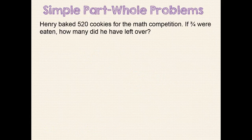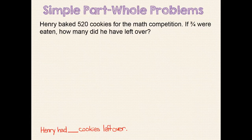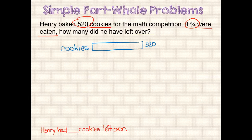Here's another simple part-whole problem. Henry baked 520 cookies for the math competition. If 3 fourths were eaten, how many did he have left over? Since we need to find out how many cookies Henry had left over, our sentence statement can be: Henry had blank cookies left over. When re-reading the problem, we identify the important information. The whole for this problem is the 520 cookies Henry baked, so this unit bar will represent those cookies.